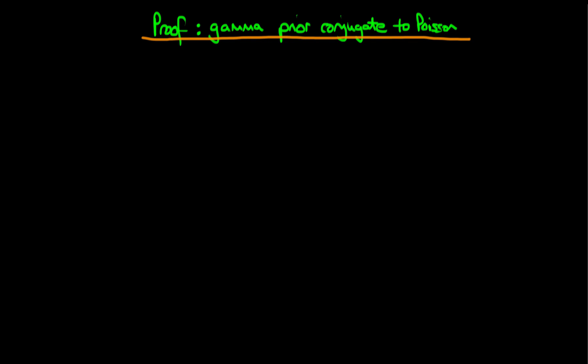In this video, I want to sketch out a proof that a gamma prior is actually conjugate to a Poisson likelihood. So what we're assuming here is that the likelihood is a Poisson distribution. Xi, which in this case represents the count of violent crimes in a given city, is Poisson distributed with some sort of mean parameter lambda.